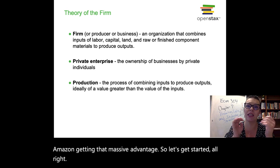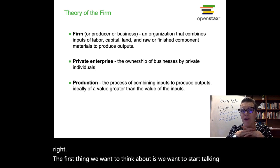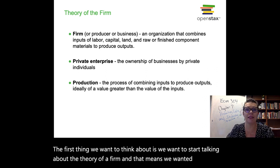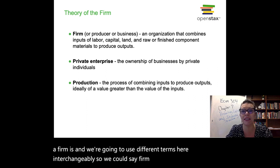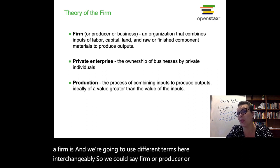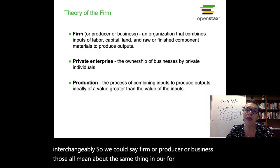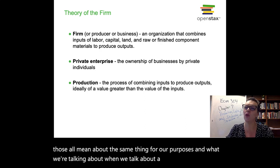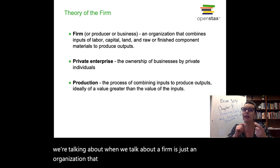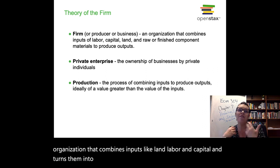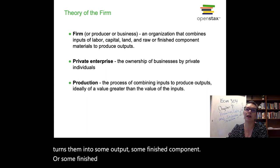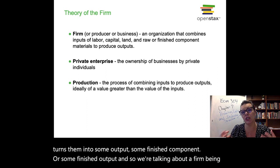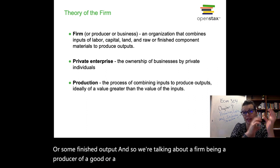The first thing we want to think about is the theory of a firm — we want to define what a firm is. We're going to use different terms interchangeably: firm, producer, or business all mean about the same thing for our purposes. A firm is just an organization that combines inputs like land, labor, and capital and turns them into some output — some finished component or finished product. We're talking about a firm being a producer of a good or a service, transforming inputs into output.